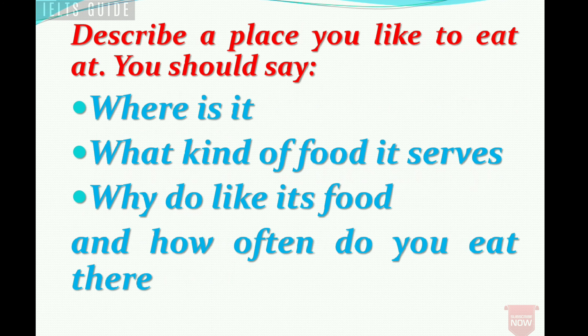One more cue card for you: 'Describe a place you like to eat at. You should say: where it is, what kind of food it serves, why you like its food, and how often you eat there.' This is quite similar but not totally the same — you have to describe a place, giving a name of a restaurant or area. I am not going to discuss this cue card in detail today, but I'm sharing it so you can try to make your own answer. If you find difficulties, mention it in the comment section and I will try to make a video on it.